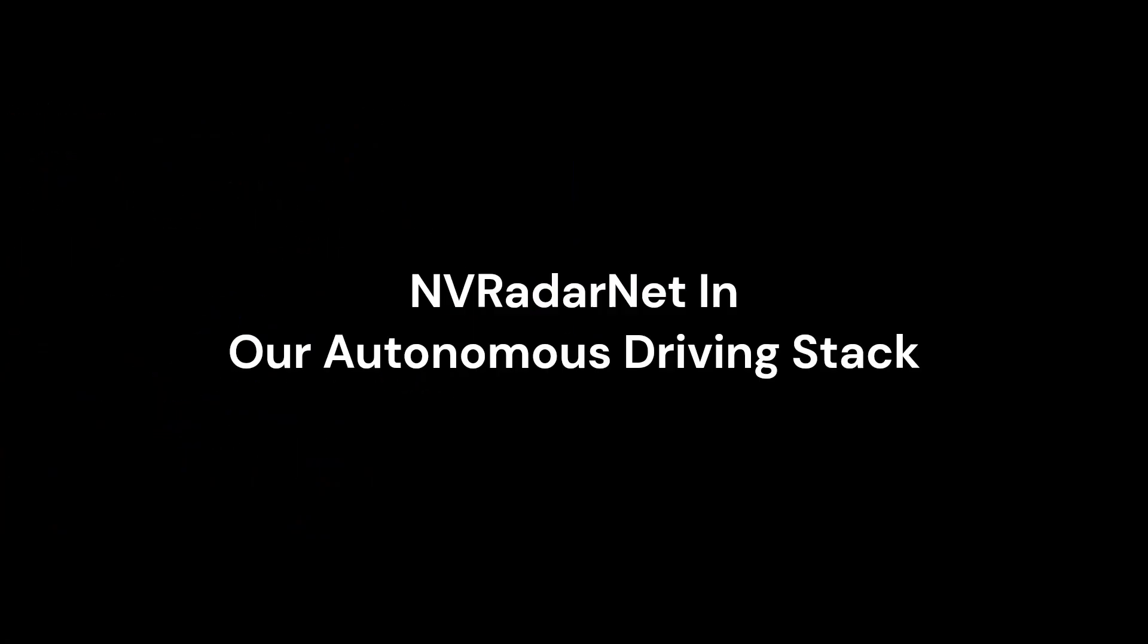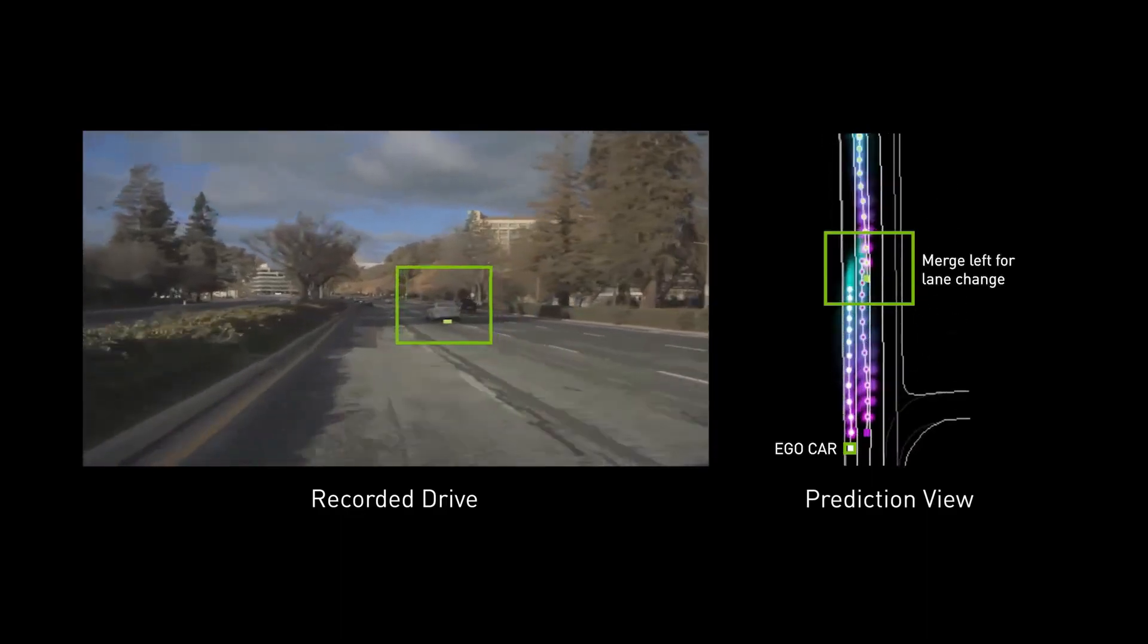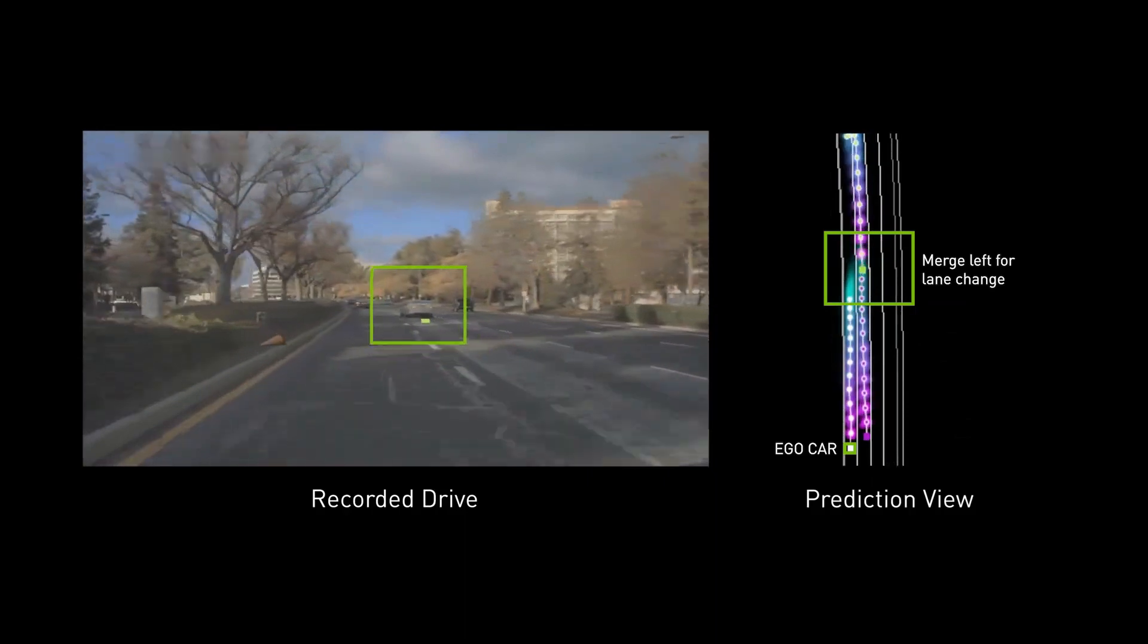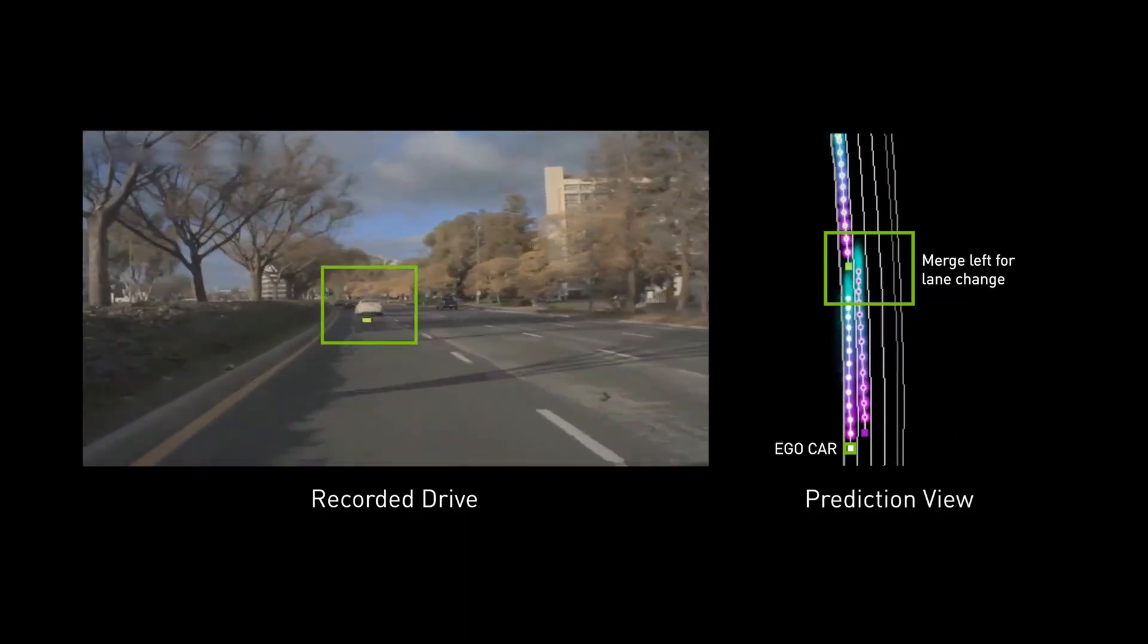Finally, we demonstrate that we are able to drive on a radar stack alone utilizing NVRadarNet along with classical radar processing as the input to our prediction net, which in turn predicts future vehicle trajectories. We see that the prediction net is able to correctly predict multiple mergers using radar-only perception.